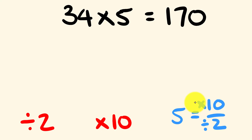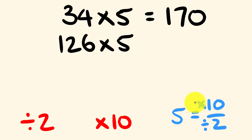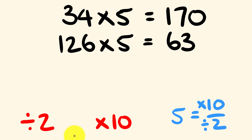Let's do another question. Say we want to work out 126 multiplied by 5. We divide by 2: 126 divided by 2 is 63. Multiplied by 10 is 630. Instant.